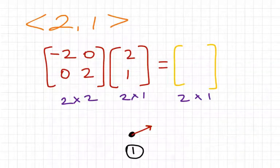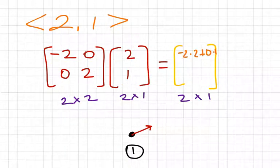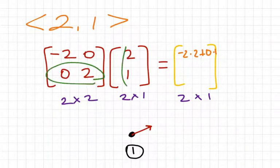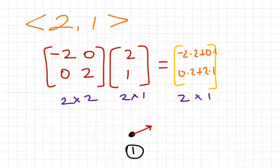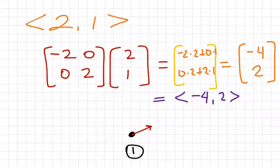Setting that up and doing the matrix multiplication — row times column and add the products — we get: negative 2 times 2 plus 0 times 1 for the first row, and 0 times 2 plus 2 times 1 for the second row. Simplifying gives us (-4, 2). That is also a vector matrix, so we can write it as the vector (-4, 2).